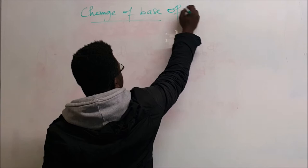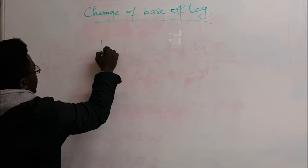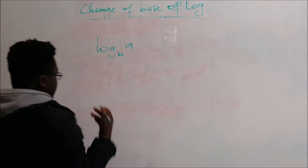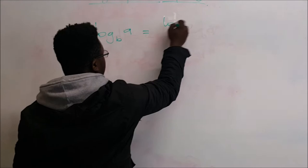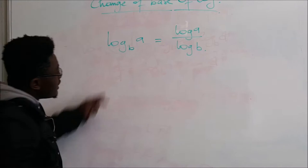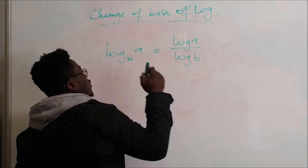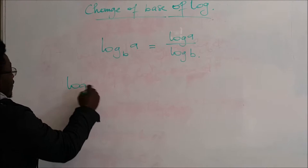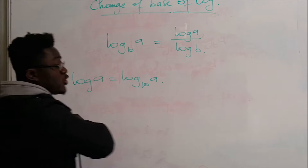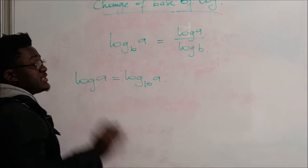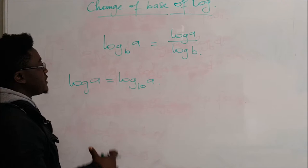Let's talk about the change of base of the log. If we have log base B of A, we are talking about change of base. This expression of log — we know it is the common log of A, or the log of A. When the base is not shown, we know that it is going to give the log to base 10. That you must always know: when the base is not given, the base must always be 10. That's what we call the common log.